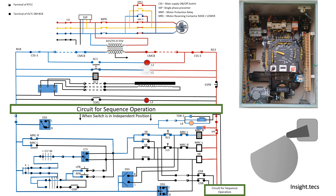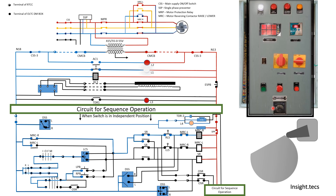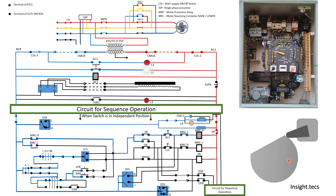The first contact that closes sends power toward the hooter circuit — the hooter is placed on the RTCC panel on the outside and continuously indicates that the process of raising the tap position is in progress. The second contact getting closed energizes the SR contactor. Once SR is energized, its NC contact becomes NO, meaning it should open. However, a third DSS contact closes simultaneously, sending power forward toward MRCL.